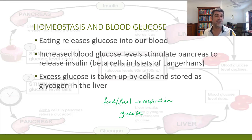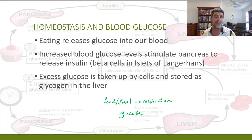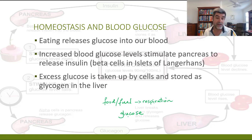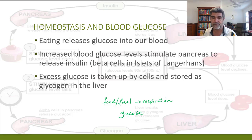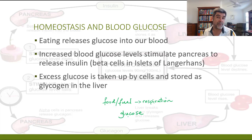We need a continuous supply of glucose. Certain activities — when we're exercising, for example — mean our muscles are requiring a lot more energy, a lot more fuel, a lot more glucose. And what they will do is they'll deplete the supplies. So how does our body know what's going on in terms of glucose levels, and what does it do in response to changes?